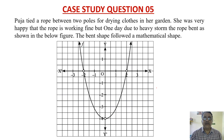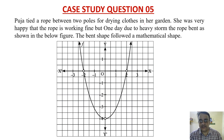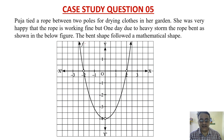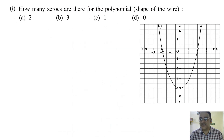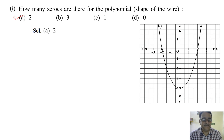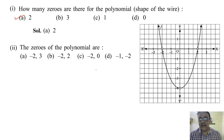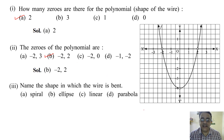Now we move to case study question five. Pooja tied a rope between two poles for drying clothes. One day due to heavy storm the rope bent as shown in the figure. Based on this figure: how many zeros are there for the polynomial? Two. The correct option is A. The zeros of the polynomial — option B.